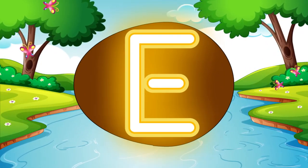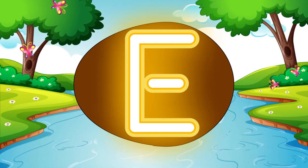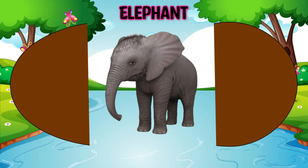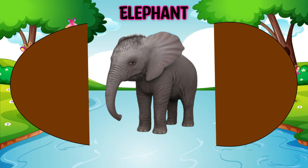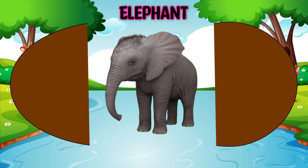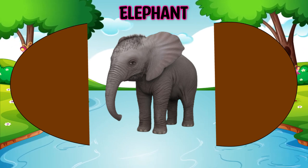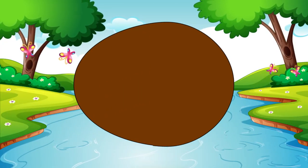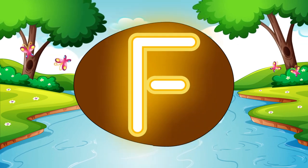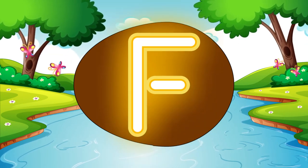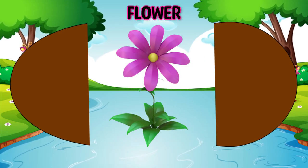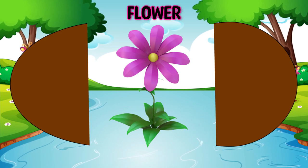E is for A-A-Elephant, A-A-Elephant. F is for F-F-Flower, F-F-Flower.